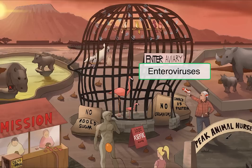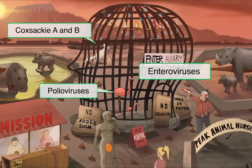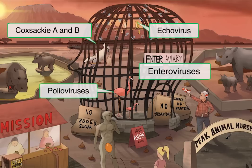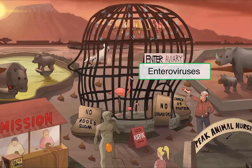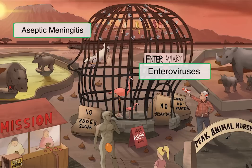Moving on to our aviary — the sign saying 'enter' reminds you that this group is the enteroviruses, which includes poliovirus represented by our flamingos, coxsackie A and coxsackie B cockatoos, and mockingbirds that echo one another to represent echovirus. There are actually hundreds more, but these are the ones we focused on. One thing I want to highlight is why the aviary is shaped like a head — as a whole, enteroviruses are the number one cause of aseptic meningitis, meaning meningitis caused by a non-bacterial organism. The sign in front of the aviary says '100% aseptic inside.'